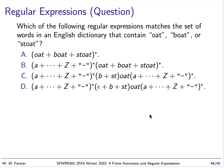Here's another question: which of the following regular expressions matches a set of words in an English dictionary that contain either the string 'oat', the string 'boat', or the string 'stoat'? A stoat is a kind of weasel that lives in the British Isles. If we think about words in the English dictionary, they involve characters from the Roman alphabet and also hyphen, so we assume these characters are made of just the Roman alphabet plus hyphen.